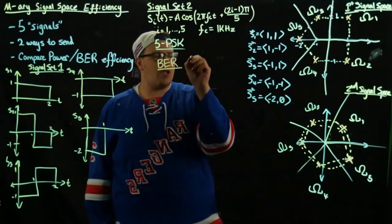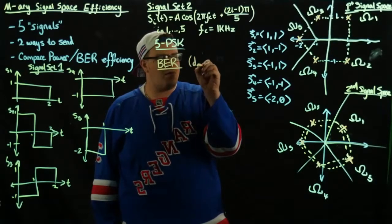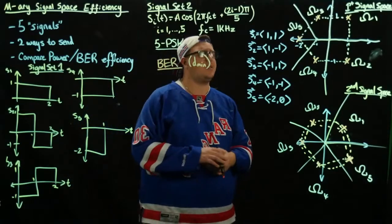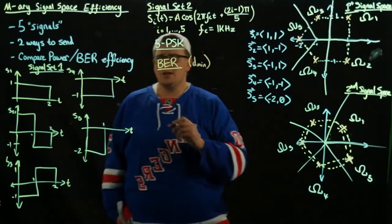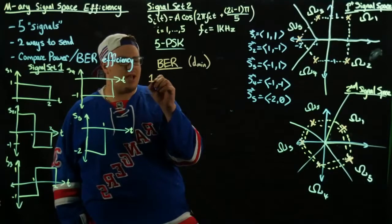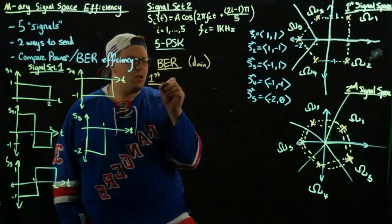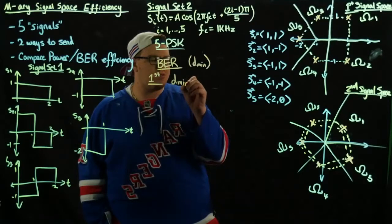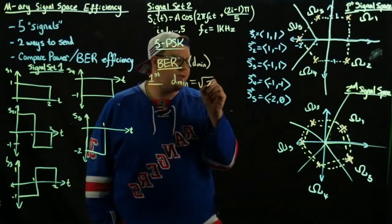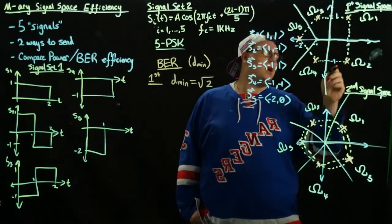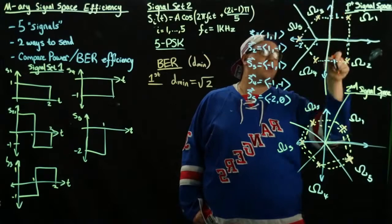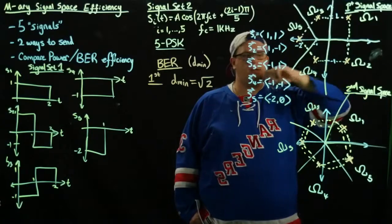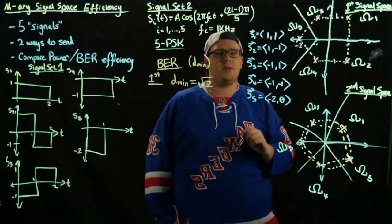When we're looking at bit error rate comparisons, we look at d_min — the minimum distance between any two signals in a constellation. For the first set, d_min is easily found by inspection to be the square root of two, because these are of length two by two, making a one-by-one grid, so the hypotenuse of that triangle is square root of two.